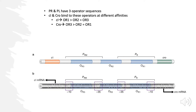On the other side of the coin: PRM expresses CI, and CI binds at OR1 with the highest affinity. Since PR overlaps with OR1, the lambda repressor binding there blocks PR entirely. RNA polymerase cannot bind at PR, so it goes to the available promoter, PRM, and transcribes leftward to make more CI — more lambda repressor — keeping us in lysogenic growth.